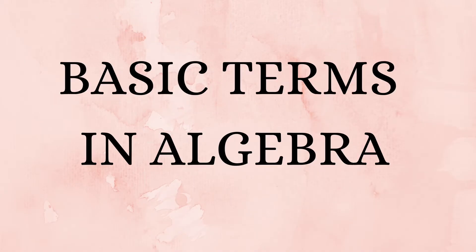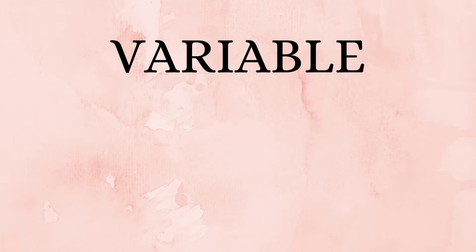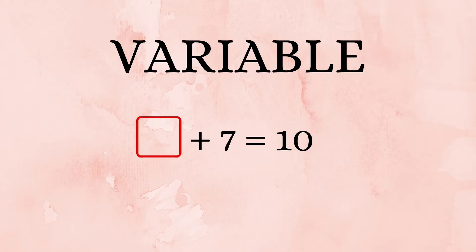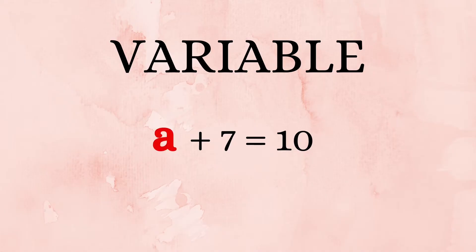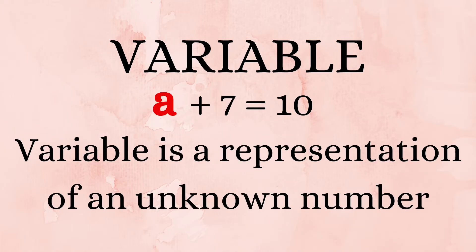First, we have the variable. This is a very common and easily understandable concept. Instead of using an empty box, we could write 'a plus 7 is equal to 10.' Here, 'a' is just a representation of a number. So we can say that variables are alphabets which are used to represent unknown numbers.